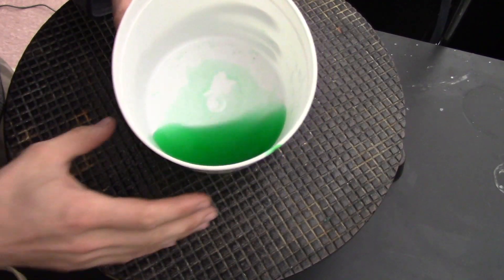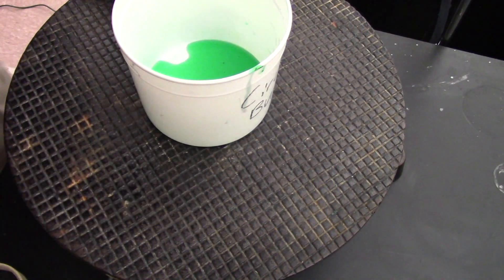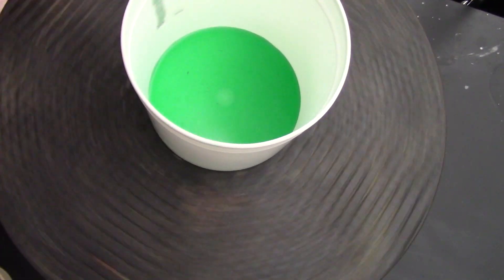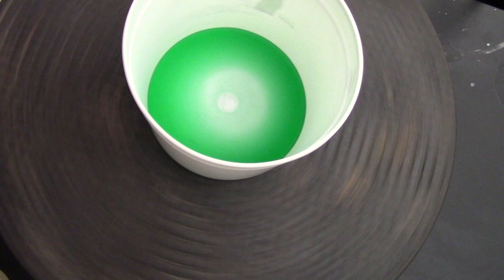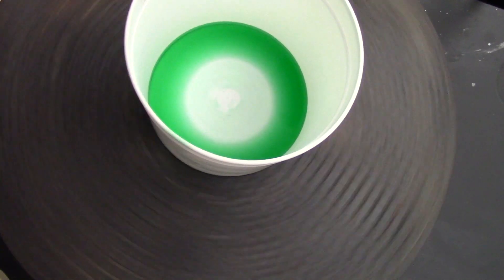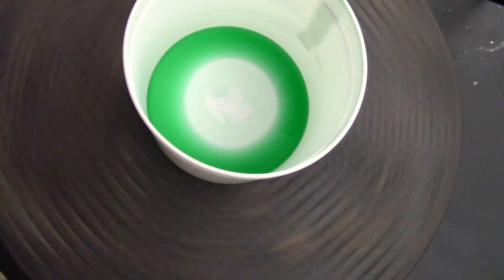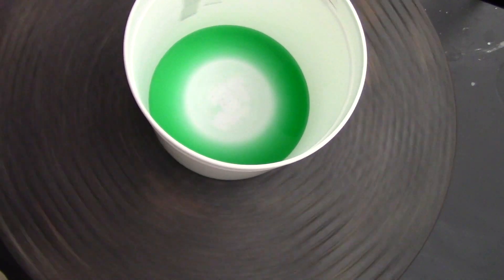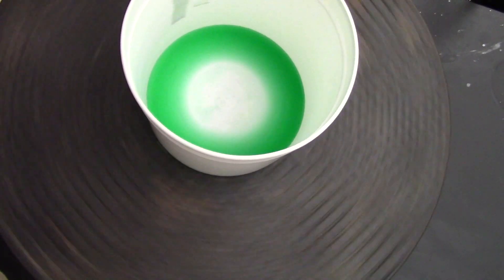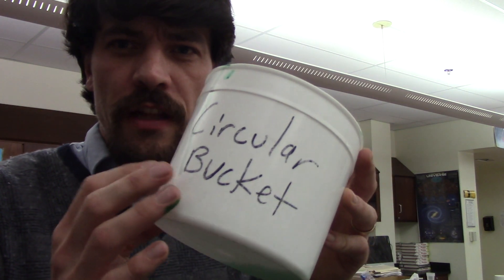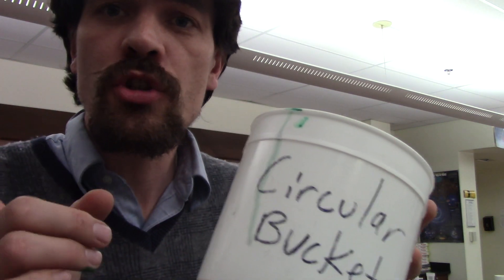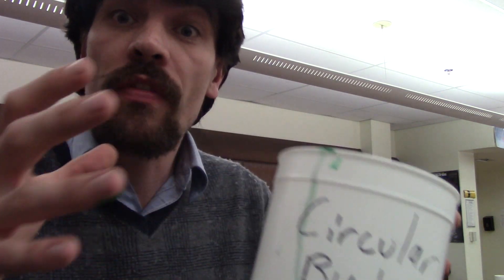Here I have that same bucket with a little bit of water and food coloring. Take a look at what happens when I spin it. Were you able to notice that in those two situations, stuff inside that circular bucket was trying to go straight, so it ends up being on the outside?